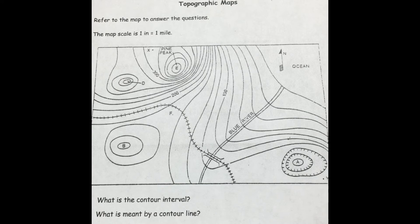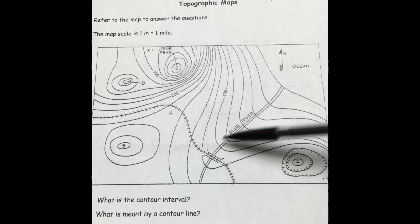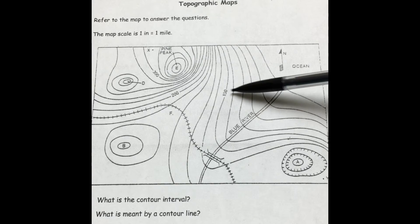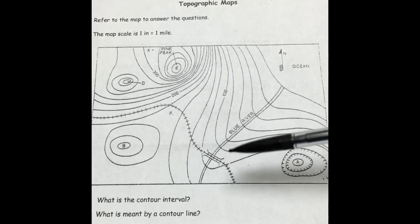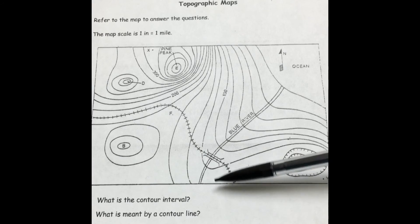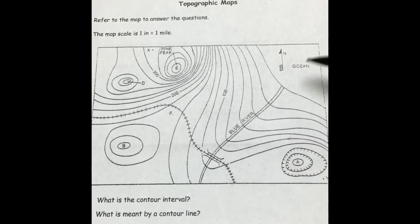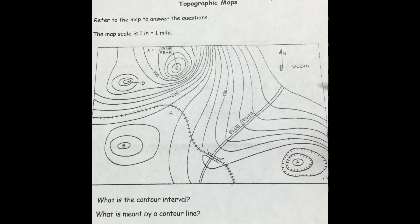The final question: in what direction does the Blue River flow, and how do you know? You can see that it gradually goes downhill — this side is at 100 and the other side is at 200. So you can suggest it flows downhill into the ocean, from the higher elevation down.